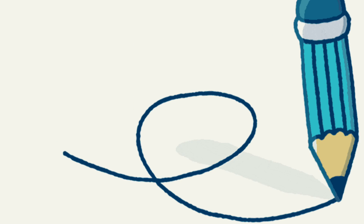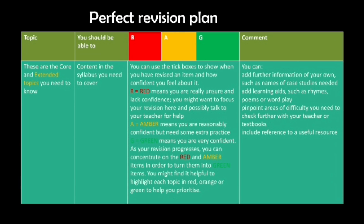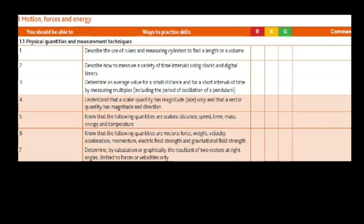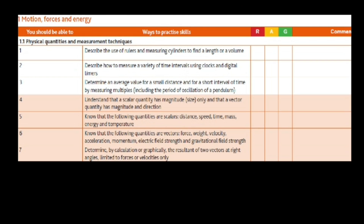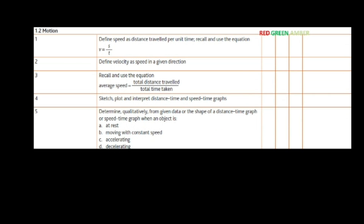I am also going to share in my coming videos some interesting rhymes, poems, or wordplay which will be helpful for you to revise your physics. This is one sample from Motion, Forces, and Energy. You can see portions are in two different colors — white for core and purple for extended students. If you are confident, go for green; if you are less confident, go for amber; and if you find it really difficult, put it in red.